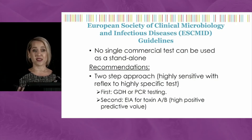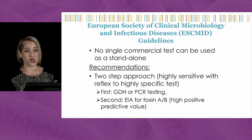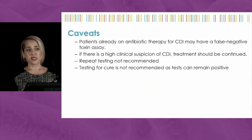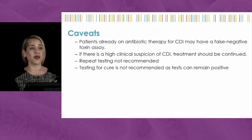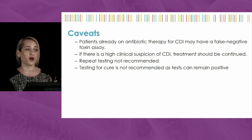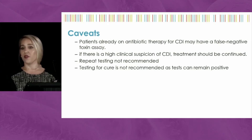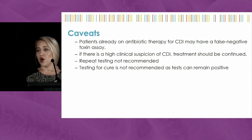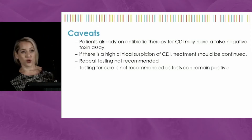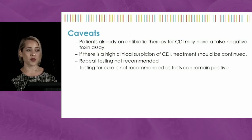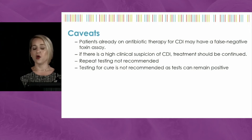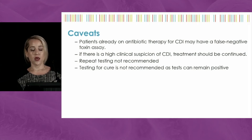What you want to do is start with a very sensitive test—either GDH or PCR—as your first-pass screen to identify the presence of organisms, then reflex to toxin to confirm actual infection. Testing caveats: if the patient was already started on antibiotics before testing, you should be concerned that the test will likely be falsely negative. I don't think you can really trust any testing done once antibiotics have been started.